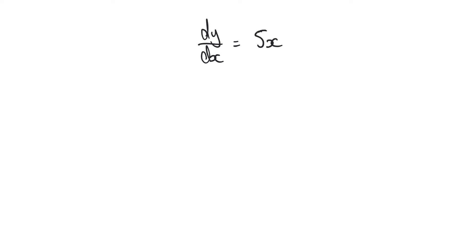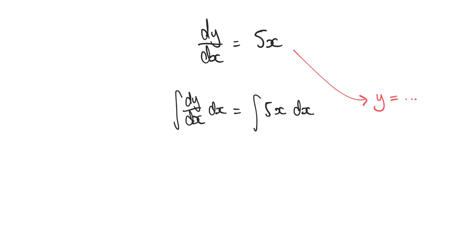Let's apply this to a numerical example. Suppose we have dy/dx equals 5x and we want to find our solution in the form y equals. Following what we said previously, we're going to integrate both sides. That gives us y equals the integral of 5x with respect to x, and if we integrate 5x with respect to x we get 5/2 x squared plus c.